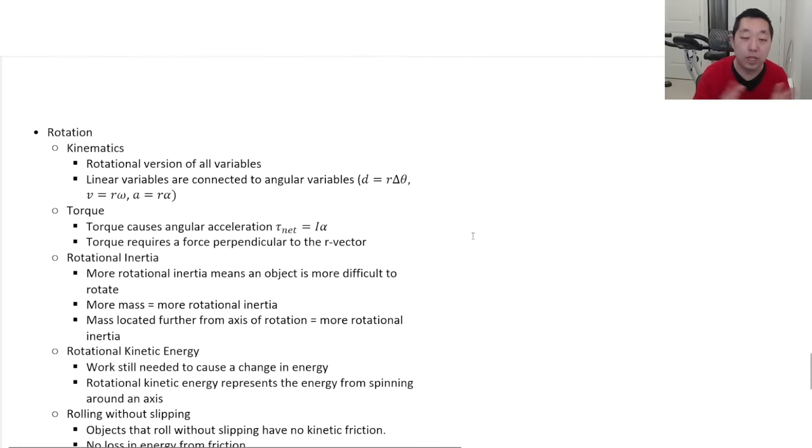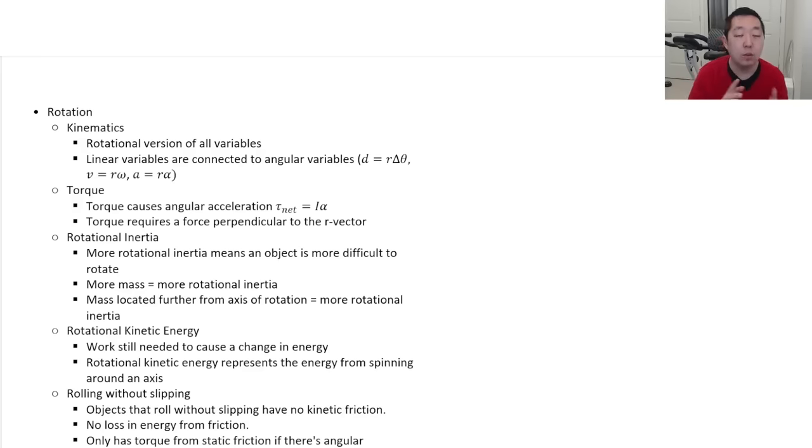Finally, the big one, rotation, which I think is kind of two units. Kinematics is a rotational version of all the variables. And then what we do is there's a few other equations that relate the linear motion variables to the angular motion variables. And that's where you just multiply the angular motion variables by R to get the linear motion. So distance is R times the change in angular position. Linear velocity is equal to R times angular velocity. And linear acceleration is R times angular acceleration.